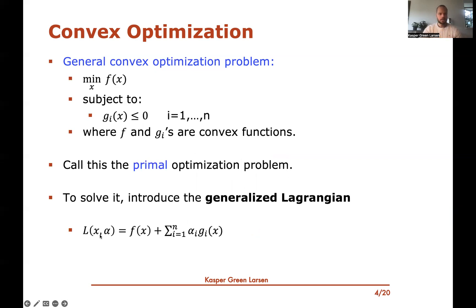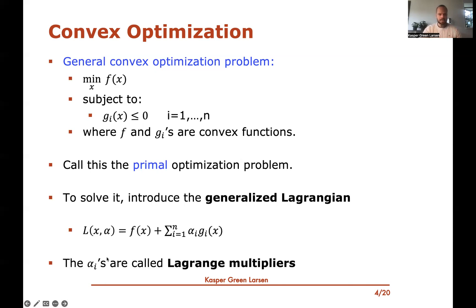The generalized Lagrangian is a function that takes two inputs, x and alpha. Here x is the optimization variable and alpha is a vector of parameters with one entry for each constraint in the primal problem. The generalized Lagrangian takes the form f(x) plus a sum over all the original constraints, where each alpha_i is multiplied by g_i(x). Each of these alpha_i's are typically called Lagrange multipliers.